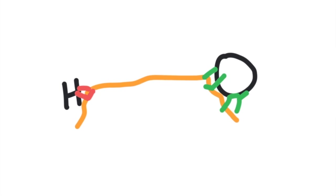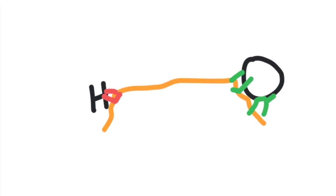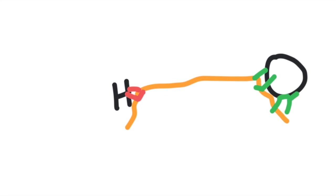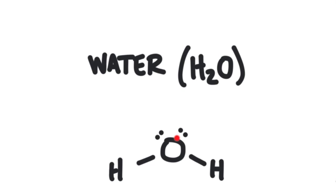Sometimes the electrons are being shared evenly in a covalent bond, but other times they are not. A covalent bond is a bit like a tug of war, where the atoms involved may have different strengths. The strength of an atom is measured by its electronegativity — the ability of an atom to attract electrons to itself. Oxygen has a much greater electronegativity than hydrogen, so oxygen attracts the electrons in the bonds closer to itself. Since electrons are negatively charged particles, the oxygen ends up with a slightly negative charge, and the hydrogen atoms have a slightly positive charge. These slight charges are indicated with the symbols delta-negative and delta-positive.